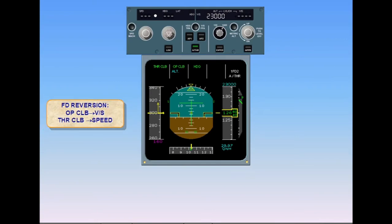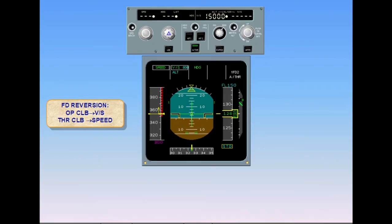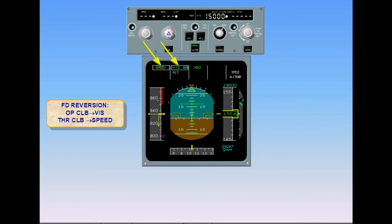This time we are in climb, with open climb and thrust climb engaged. Once again, we will not follow the bars, but will keep the pitch lower than what is needed, and the speed increases. When the aircraft reaches VMAX plus 4, autothrust reverts from thrust climb to speed, and thrust decreases to recapture the target speed. Simultaneously, open climb mode reverts to the current vertical speed. Depending on configuration — gear and flaps — this reversion can occur at VLE or VFE.